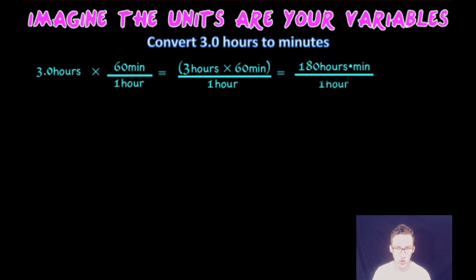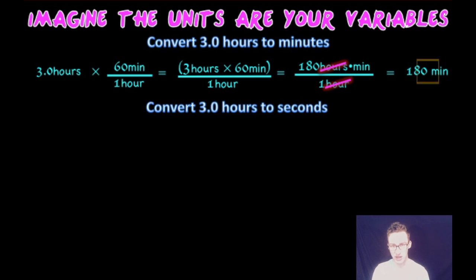That will simplify to 180 hours times minutes over one hour, which will further simplify to 180 minutes because our units of hours will cancel out.